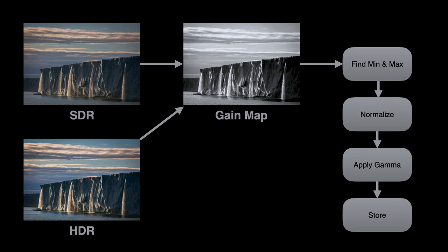At the same time, we can apply an optional gamma transform. We've sometimes found this helpful to optimize the distribution of pixel values for integer coding. If you have a very asymmetric gain map where all the values are on one side, you don't want them all to be quantized into one bin, so gamma is an optional parameter to redistribute those pixel values before saving.